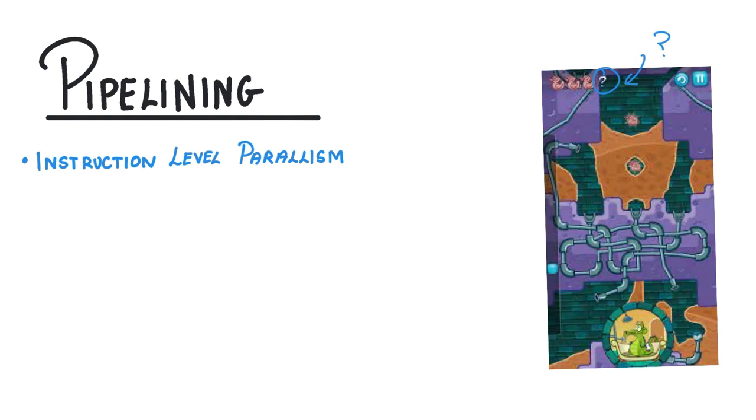So you probably remember the Von Neumann architecture, it had three stages. We had the fetch, decode, and execute. And that would give us the fetch, decode, execute cycle.